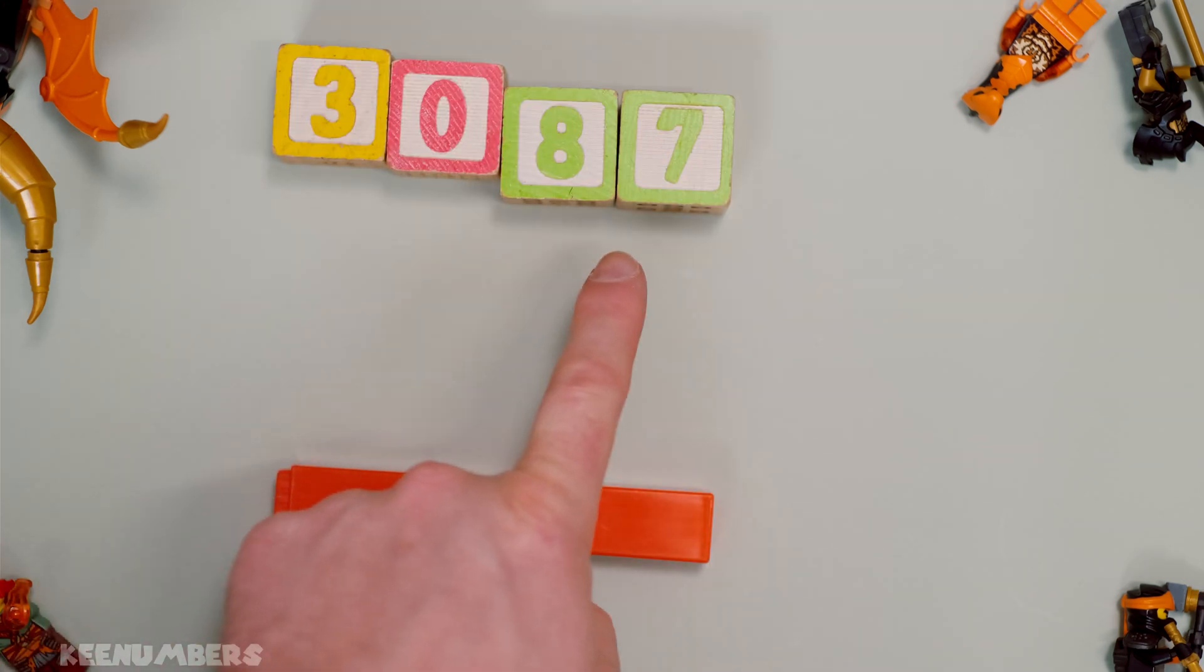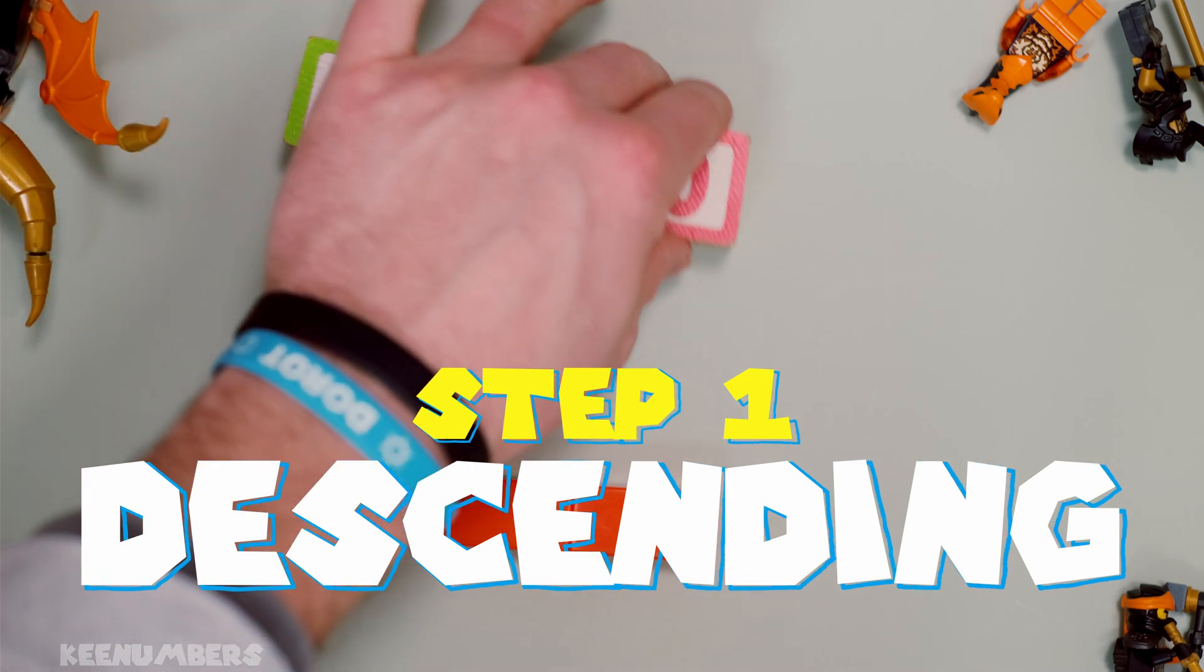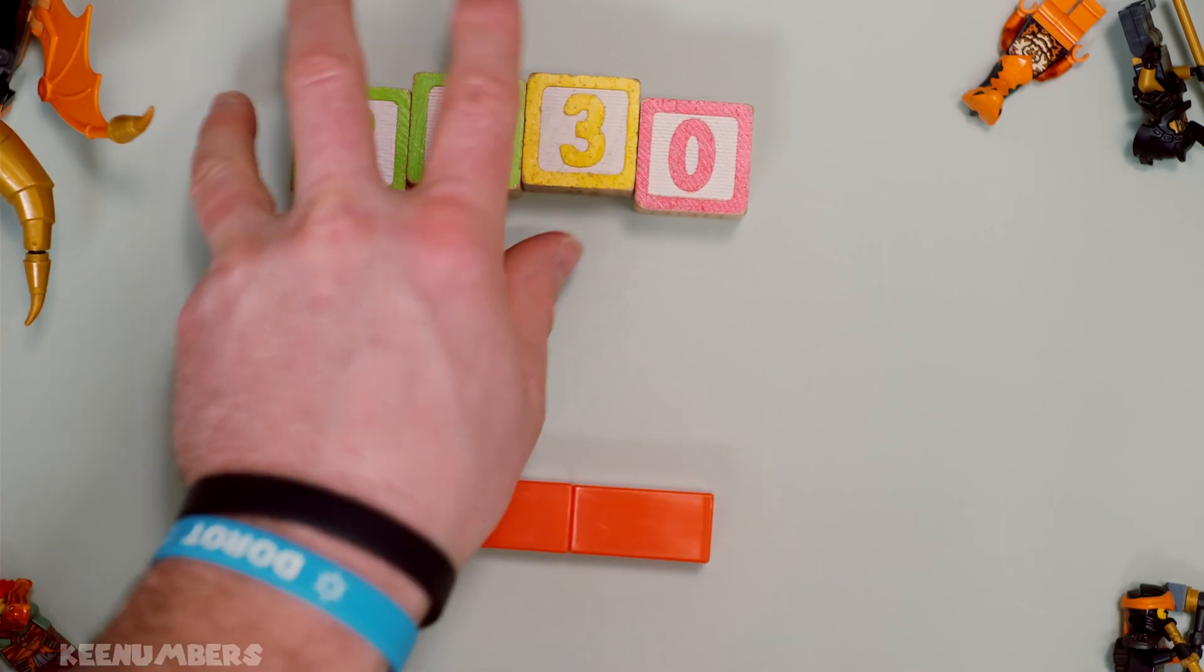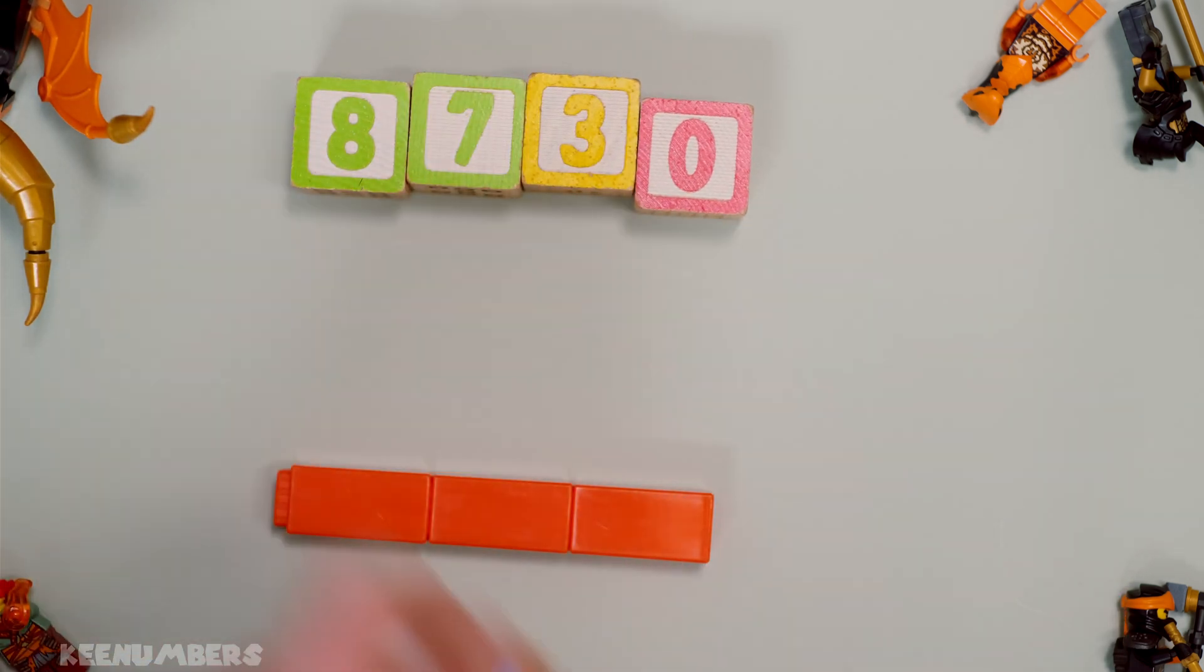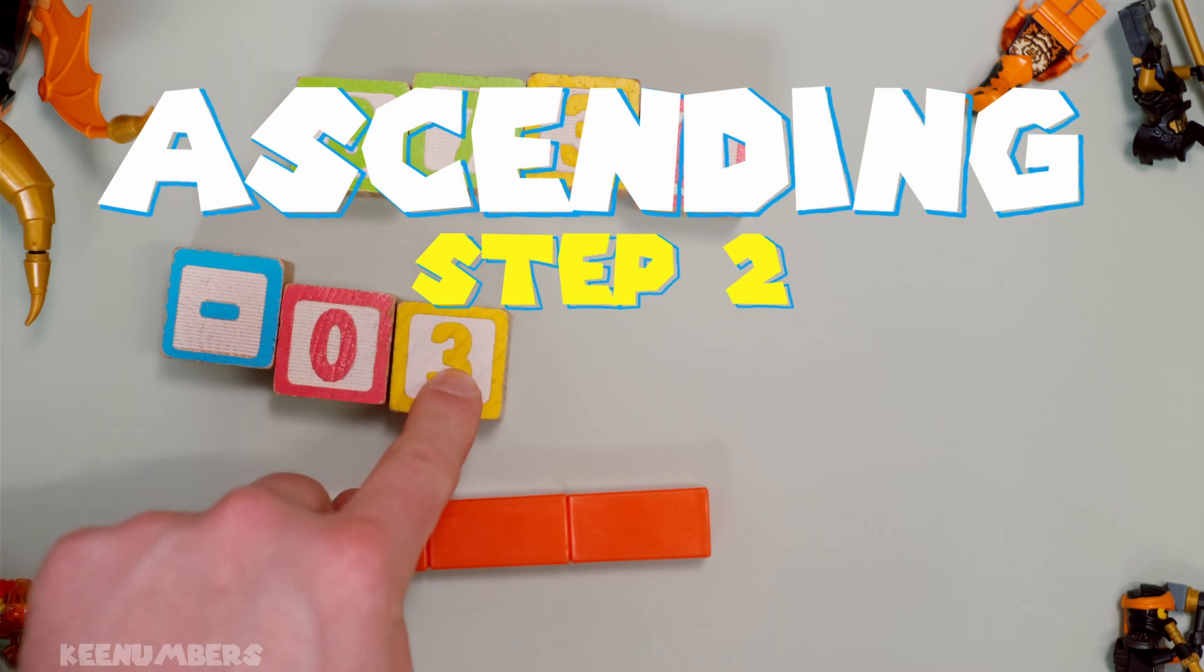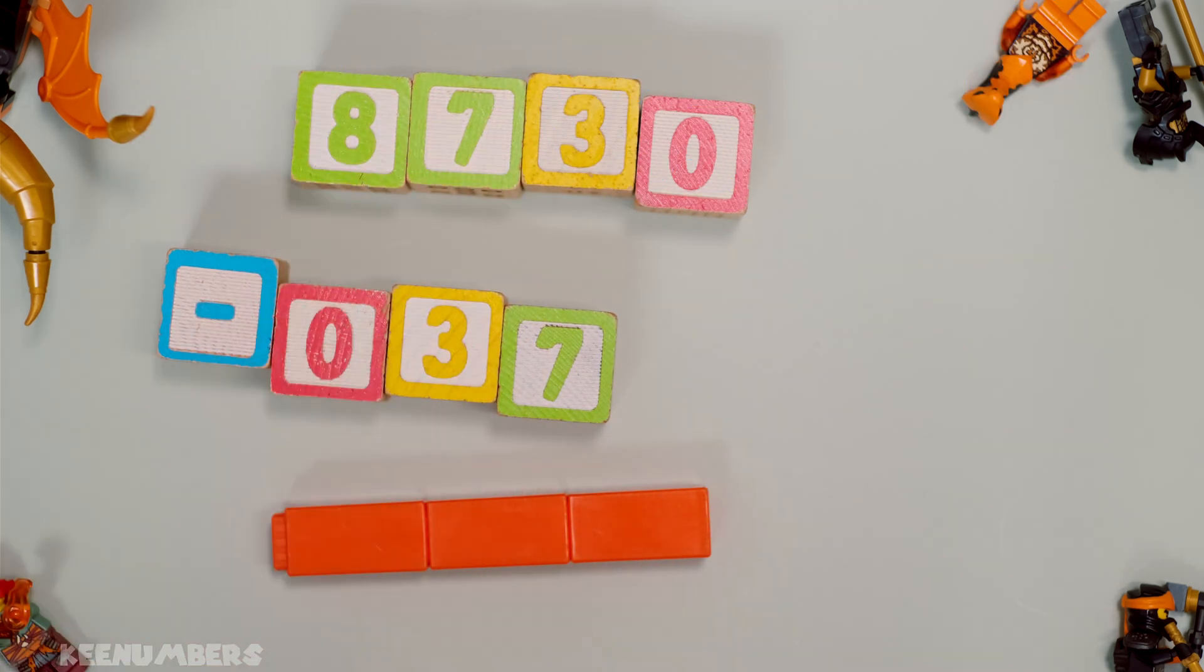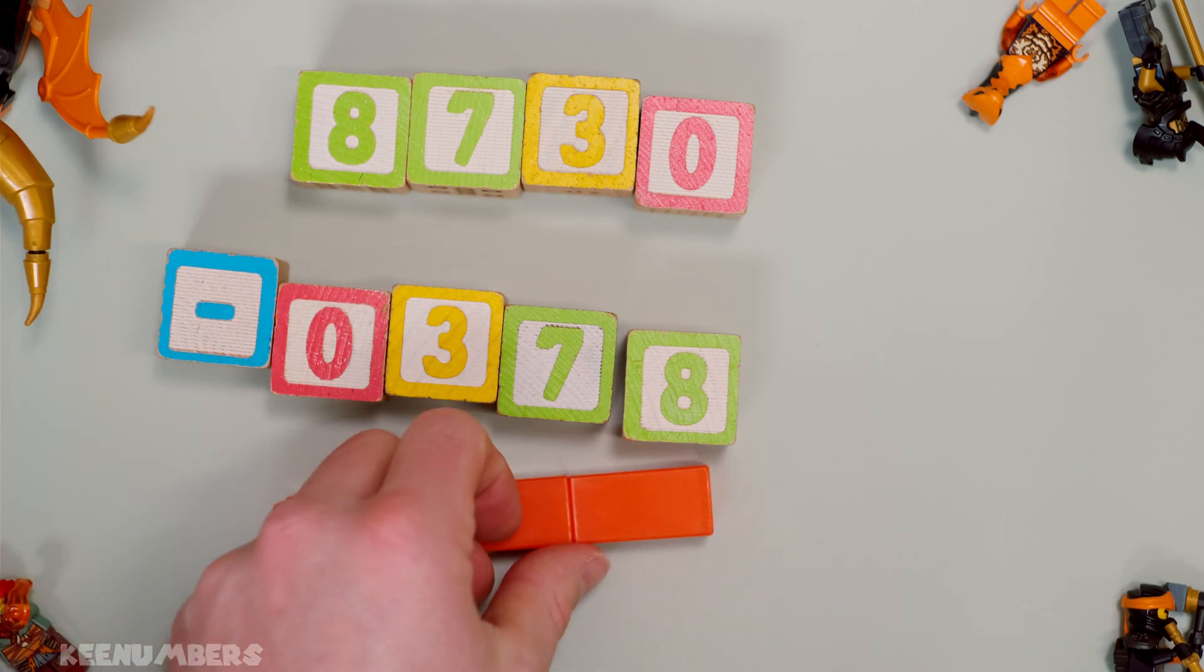Okay, you have 3087. Now, Kaprekar's constant says you're going to repeat this process by putting that number in a rearranged order, descending order. You're going to subtract this same number, but in ascending order. So the smallest number is zero. The next number is three. And then what number comes after that? Seven. And the biggest number is eight. So this is ascending order.